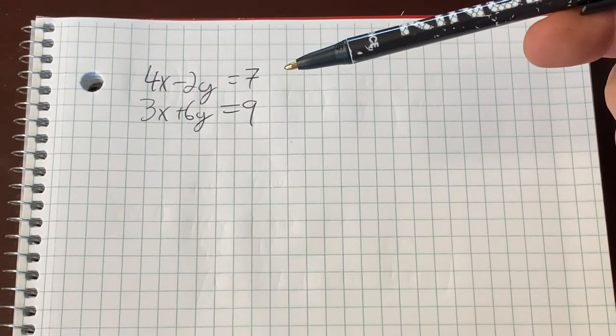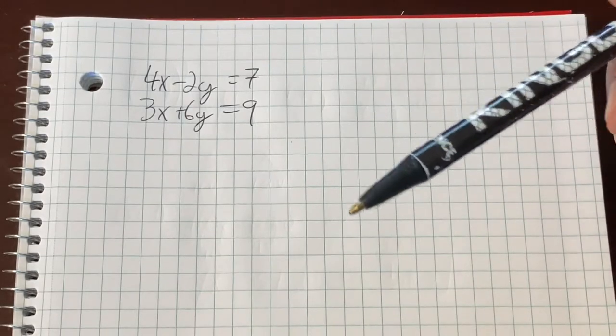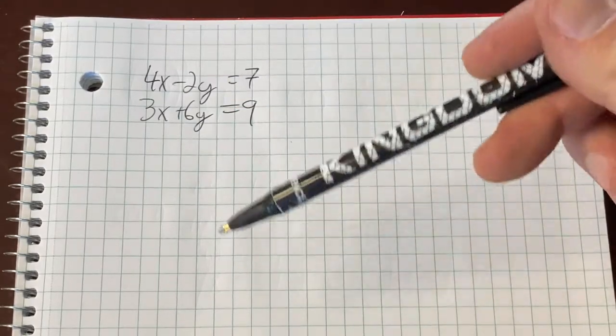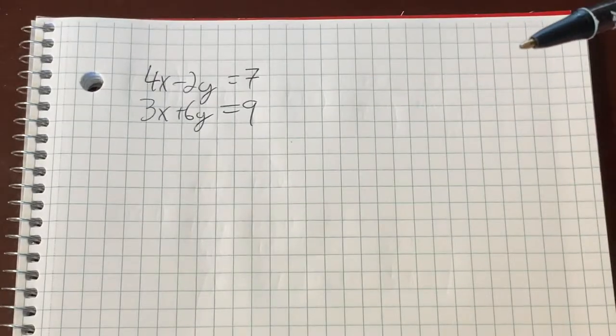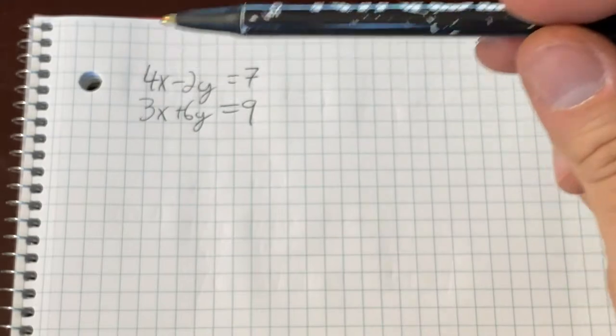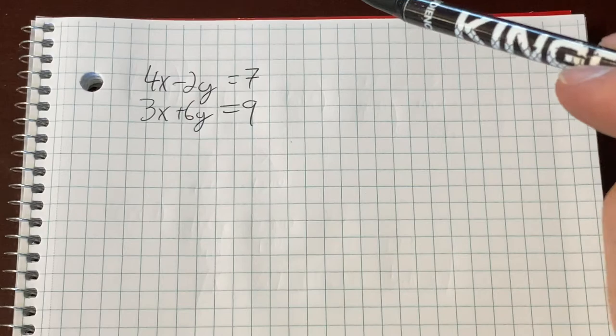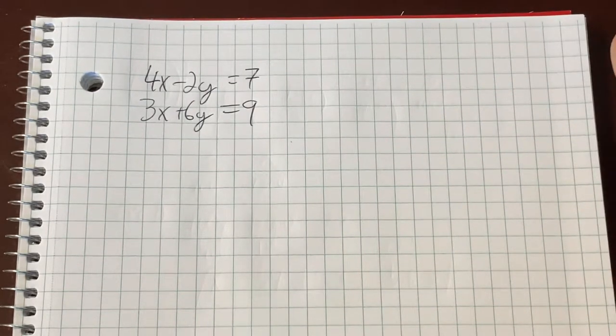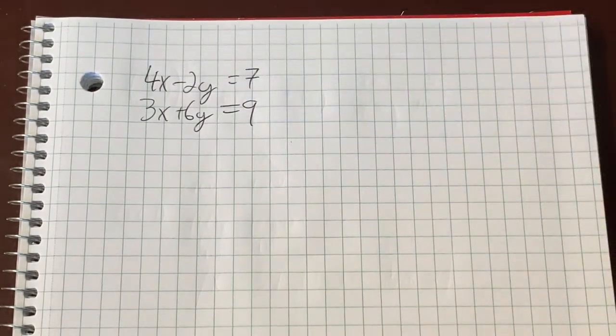Last week I showed you equations that were ready to have a variable eliminated. And what made them ready, if you recall from last week, is that one of the variables, didn't matter which one, either x or y, had the same coefficient in front, had the same number in front. So like in front of both x's, you had a 2 and a 2, or maybe there was a 2 and a negative 2. It didn't matter if it was positive or negative because we could eliminate either way, adding or subtracting. As you can see here with the first one we're going to look at today, that is not the case.